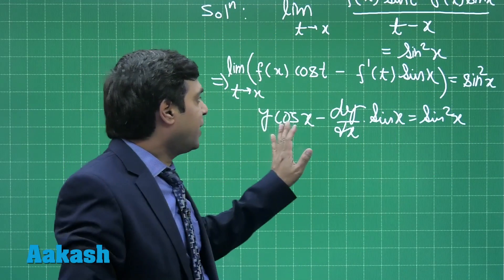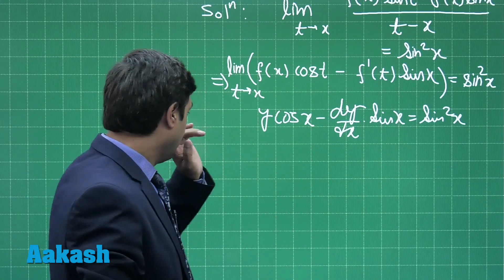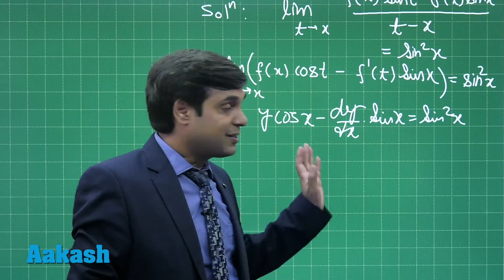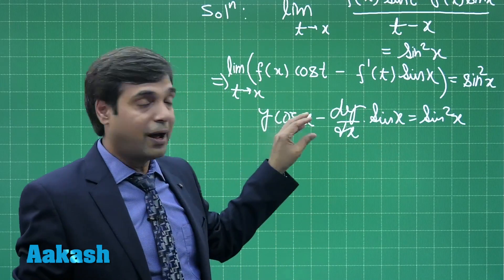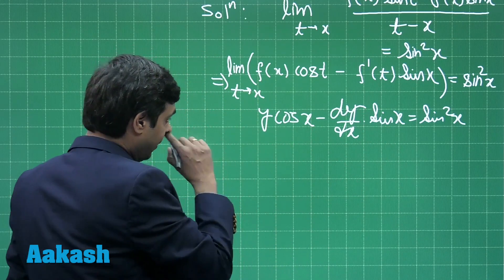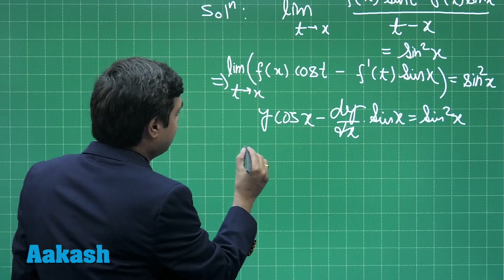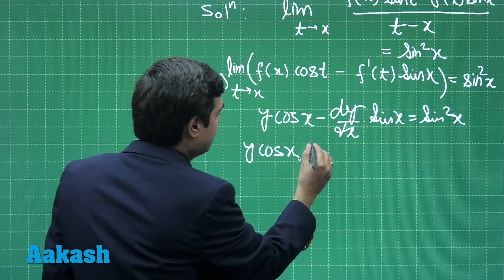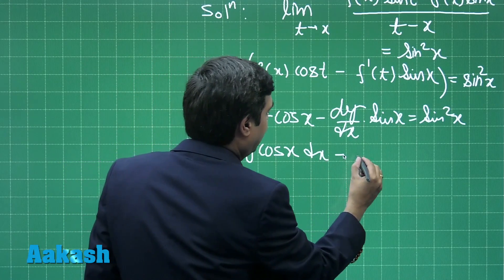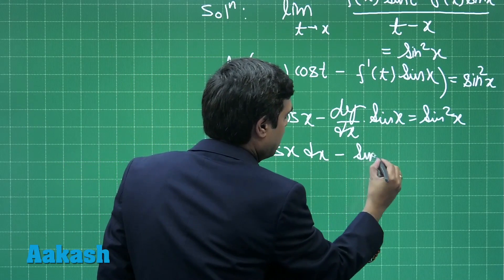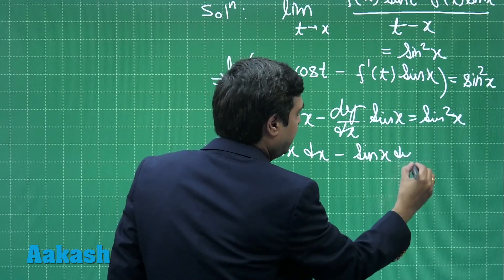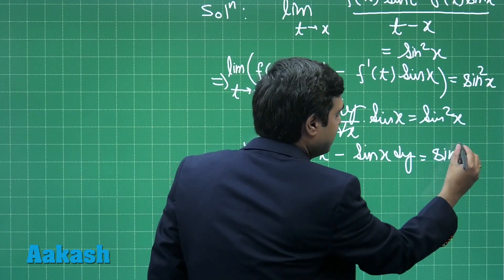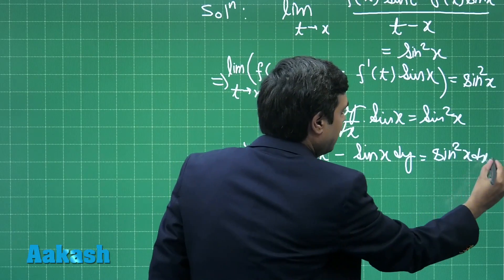I have simply taken f(x) as y. This can be converted into a linear differential equation or can also be solved by inspection method. We can write it as y cos x dx - sin x dy = sin²x dx.